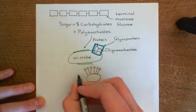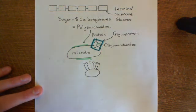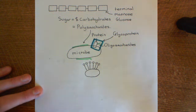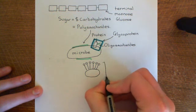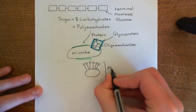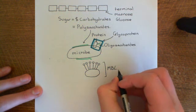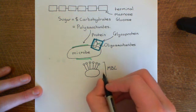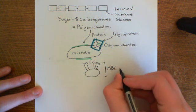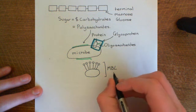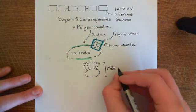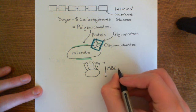So this is the mannose-binding lectin complex — six mannose-binding lectins and two mannose-binding lectin-associated serine protease 2s, and then two mannose-binding lectin-associated serine protease 1s. If you've watched my video on the classical pathway of complement activation, you'll notice how similar the structure of this is to the C1 complex. In fact, they're believed to probably have a common evolutionary origin.